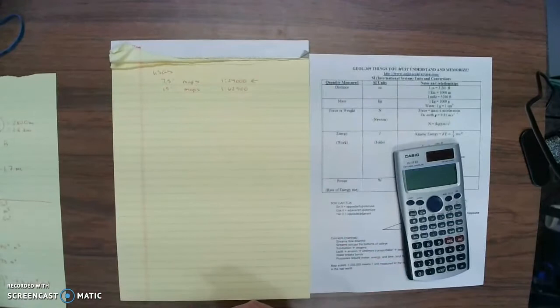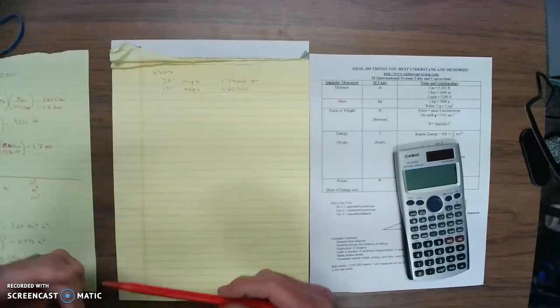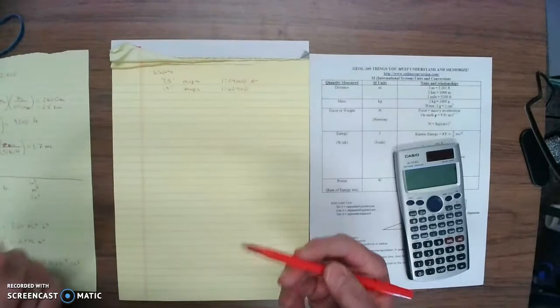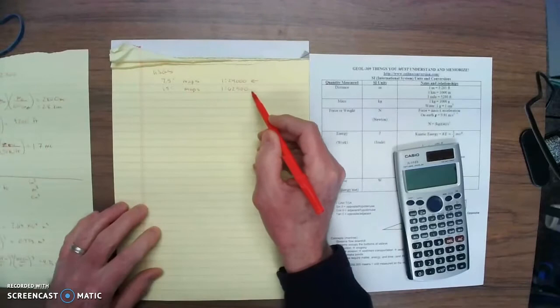So let's do an example. Let's say you're working with a map, a 15 minute map, and it has this scale of 1 to 62,500. Again, that means that one unit measured on that map equals 62,500 of those same units on the ground. So you could measure it in centimeters, it's going to be equal to those 62,500 centimeters on the map.